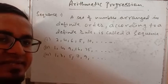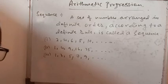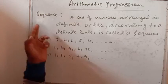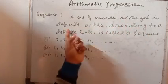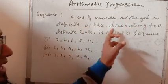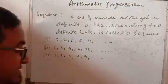Sequence means you know it is a series. In case of number it is called series of a number. So I have written the definition of sequence in very simple way. A set of numbers arranged in a definite order according to a definite rule is called a sequence.